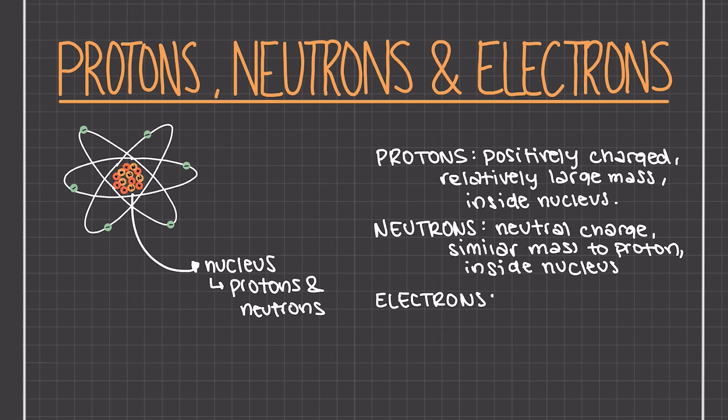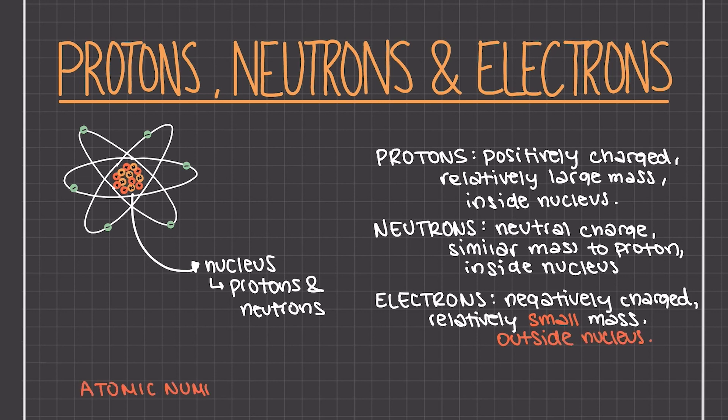The electrons, however, revolve around the nucleus and are located outside the nucleus with a negative charge and a very small mass. The atomic number of an element indicates the number of protons inside the nucleus of that element. For a neutral atom, it will have the same number of electrons.